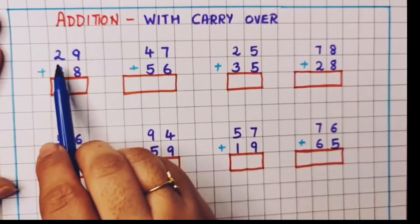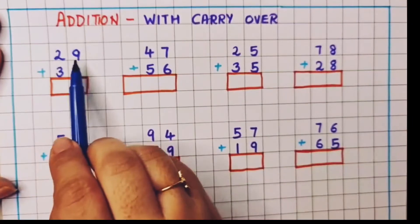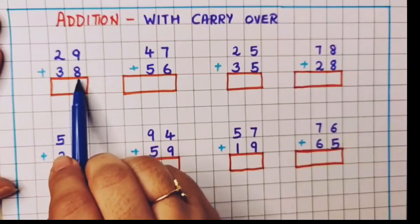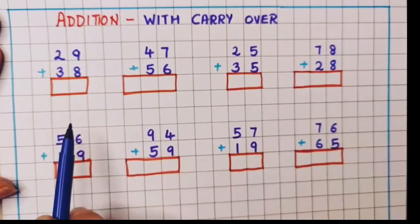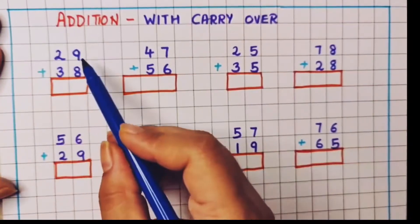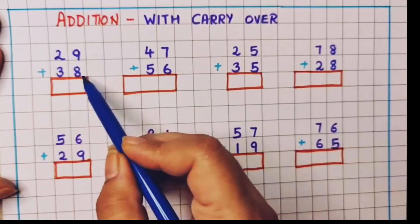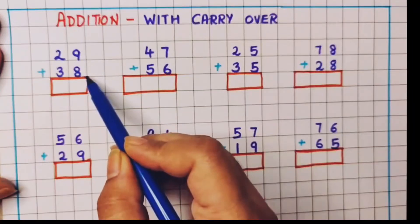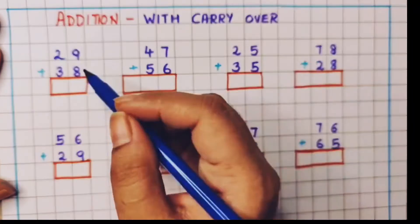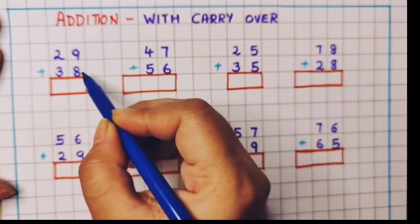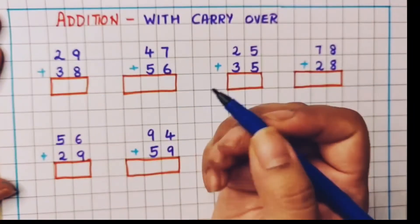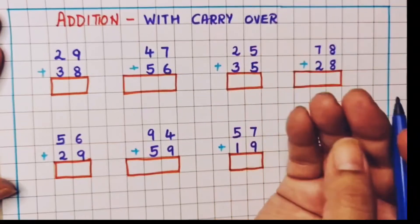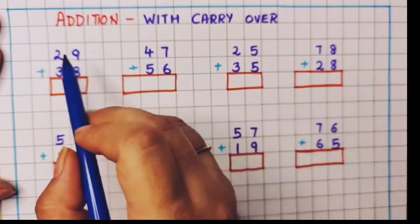First problem is 29 plus 38. So first what we are going to do? We are going to do the addition of the ones place number. 9 plus 8 is 17. You can do the counting on your fingers also, children.